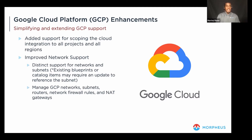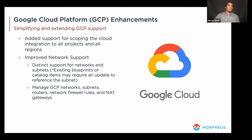A question came through: when will 5.3.1 be available for download? There is no specific date at the moment — it will be within the next couple of weeks, and there will be an announcement via the normal channels. Another question: is simplifying all regions applicable only to GCP? No — it was added for Azure in 5.3.0, and I believe it's there for AWS as well.